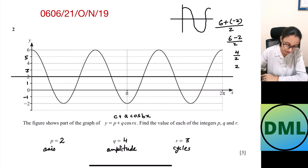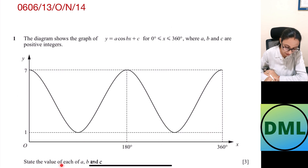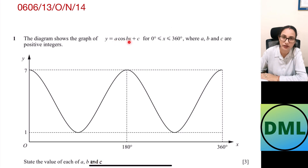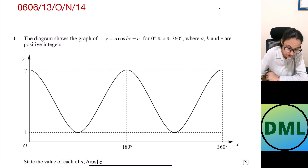Let's see one more example. The diagram shows the graph of y equals a·cos(bx) plus c, for x between 0 and 360 degrees, where a, b, c are positive integers. State the value of each of a, b and c. The maximum value is 7 and the minimum value is 1, so 7 plus 1 divided by 2 equals 8 by 2, which equals 4. My axis is at 4.